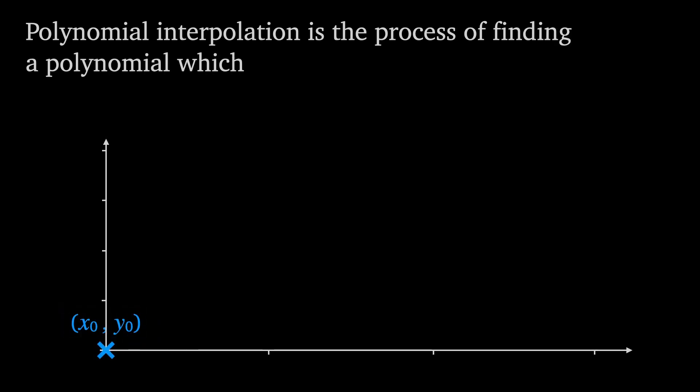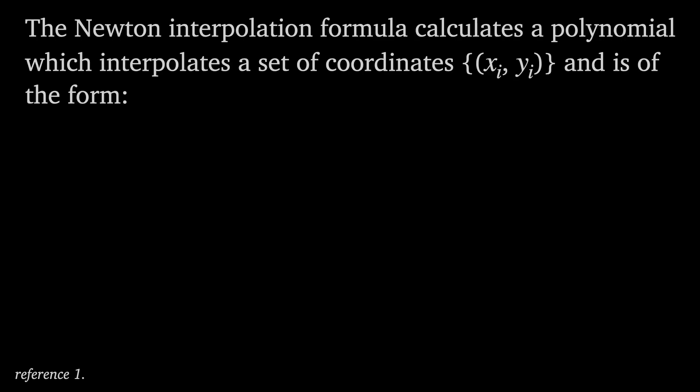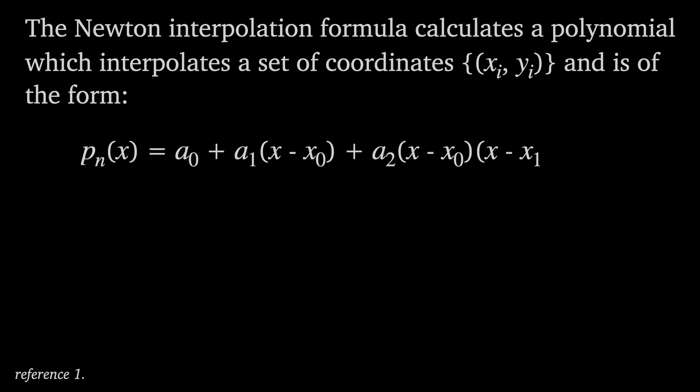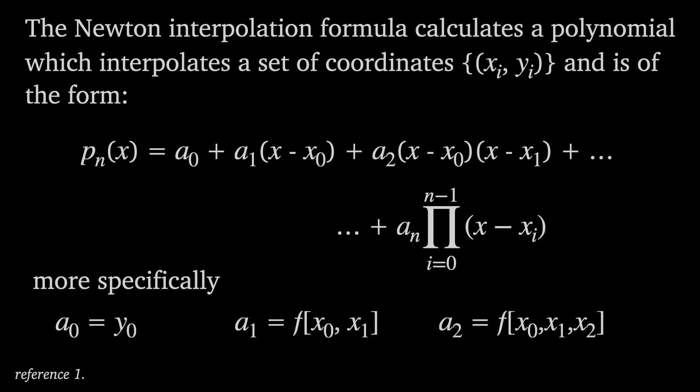Polynomial interpolation is the process of finding a polynomial which passes through a set of coordinates we call nodes. Often y will be some function of x and we want to find a polynomial which approximates that function. The Newton interpolation polynomial is of the form a sub 0 plus a sub 1 times x minus x sub 0, and so on, with the nth term being a constant a sub n multiplied by the product from i equals 0 to n minus 1 of x minus x sub i. The coefficients a sub 0 to a sub n come in the form of divided differences, which are usually denoted as f with square brackets containing a sequence of nodes.